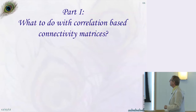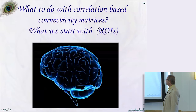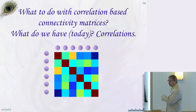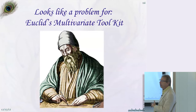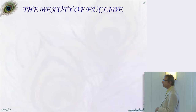Part one is about what to do with correlation-based connectivity matrices. We start with a brain that has ROIs, and we're interested in creating links between these ROIs. We start with a correlation matrix and want to get information out of that. If we want to transform a correlation matrix into a picture, this is part of the Euclidean toolbox.